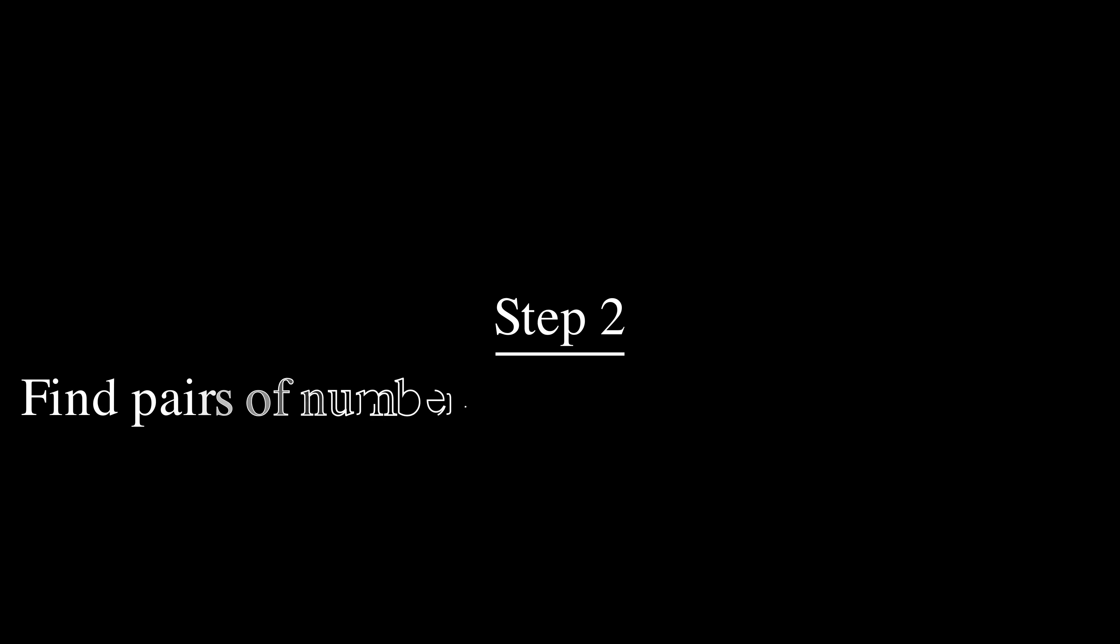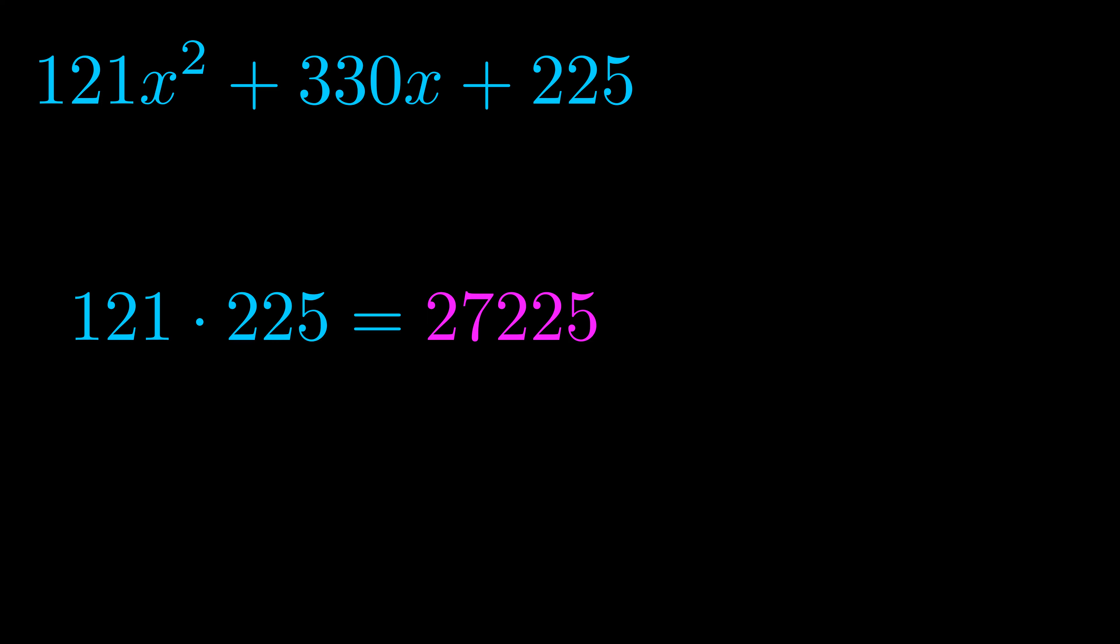Step two is to try to find all of the pairs which multiply to this number. Now it turns out you don't really need to find all of them, but go ahead and write down as many numbers as you can that multiply to the magenta value for now. Pause the video and resume when you're ready to continue.